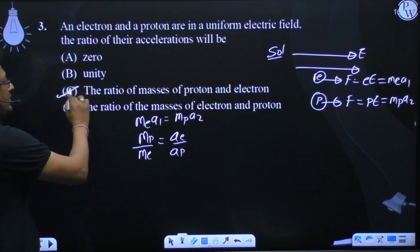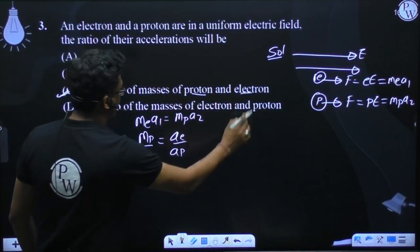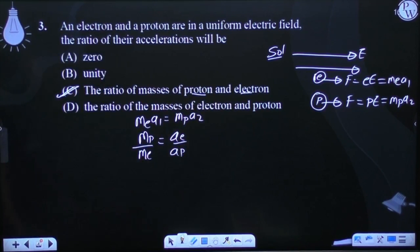equals the ratio of masses of proton and electron. The force is the same, but the acceleration will be inversely proportional to the masses. Option number C.